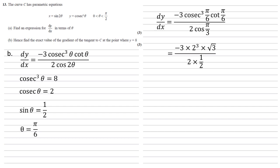Well, 2 times a half is just 1, so we're just going to be left with the top row. Multiplying the minus 3 and the 2 cubed, we end up with minus 24 root 3.